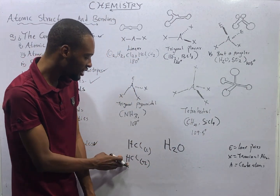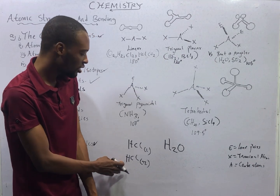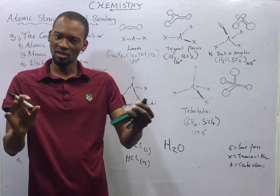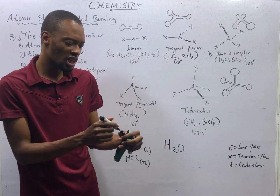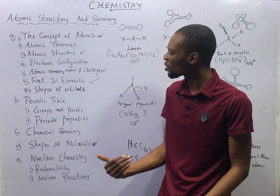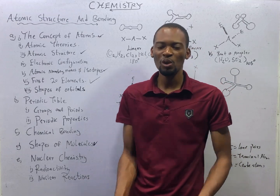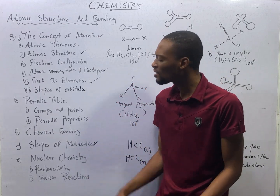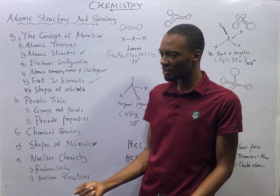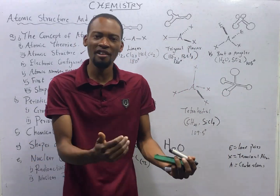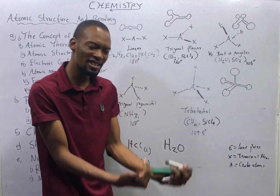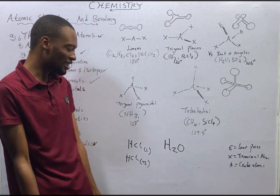HCl(L) is a gas and HCl(Aq) is an acid. Aq means it is dissolved in water or it is in solution. According to Arrhenius, an acid is any substance which, when dissolved in water, produces hydrogen ion as the only positive ion. And according to Bronsted and Lowry, acids are proton donors while bases are proton acceptors.